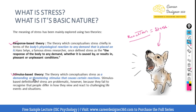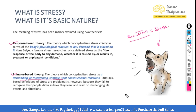The stimulus-based theory states that stress is the demanding or threatening stimulus which causes certain reactions. In this case, the dog barking — which is a change in the environment and a change in the equilibrium — is your stress. So in the response-based theory, the child's reaction was stress, while in the stimulus-based theory, the dog barking is itself the stressor or the stressful situation.